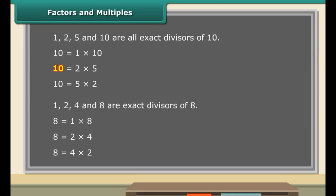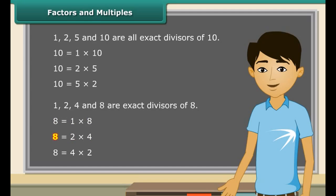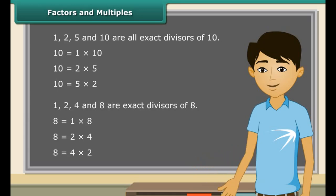Number 10 is the product of 2 and 5, and also a product of 1 and 10. Therefore, 10 is a multiple of 1, 2, 5, and 10. Similarly, number 8 is a product of 1 and 8, or 2 and 4. Therefore, 8 is a multiple of 1, 2, 4, and 8. Thus, we can say that a number is a multiple of each of its factors.